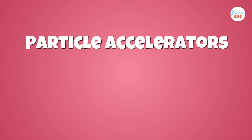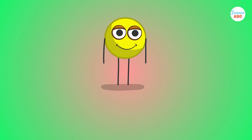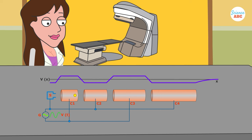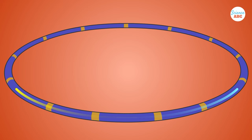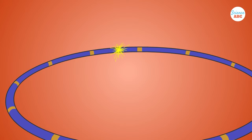Particle accelerators can be broadly classified into two categories: linear accelerators, also called linacs, and circular accelerators. A linear accelerator accelerates ions or subatomic particles to a very high speed using a strong electric field along a linear path, hence the name linear accelerators. A circular accelerator, in contrast, accelerates elementary particles along a circular path to finally smash into a target or other incoming particles from the opposite direction.